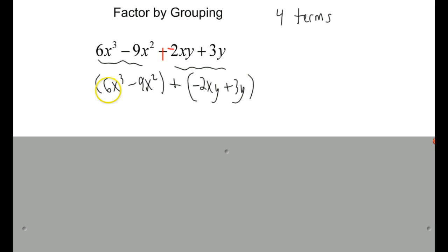Now you want to take out the GCF here. So the GCF you see here, you want to take it out. So this would be 3x squared times 2x minus 3.